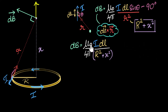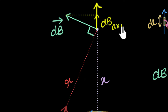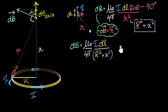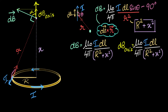So all I need to do is figure out the component of our magnetic field along the axis of the coil. To calculate the component along the axis, I can use trigonometry. If this is the component along the axis — let's call that dB_axis — and this angle is alpha, then from trigonometry: dB_axis = dB times cos alpha.